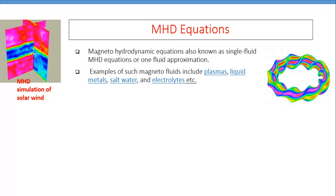It means individual particles are no more of concern to us when we are dealing with the MHD equation. Instead of individual particles, we will be interested in the motion of the plasma or the motion of the plasma fluid as a whole.